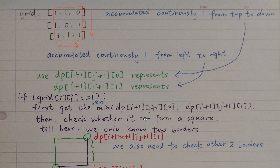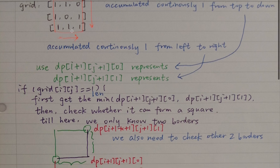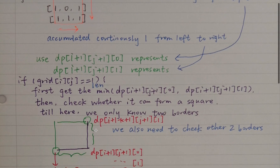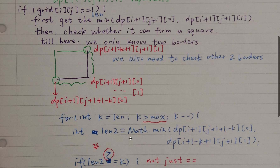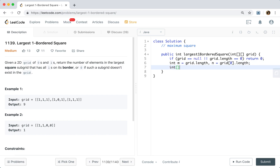In conclusion, our algorithm is: first, initialize this 3D dp array, then iterate the whole grid. If the current grid element is zero, we let the accumulated ones be zero. Otherwise, we check the possible largest square using the two sides. Let's write the code. If grid equals null or grid.length equals zero, we just return zero. Otherwise, we get m as grid.length and n as grid[0].length, and use a 3D dp array.